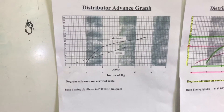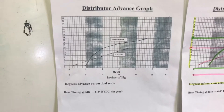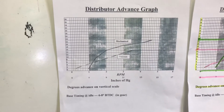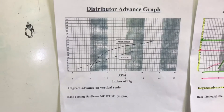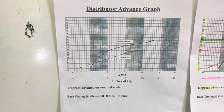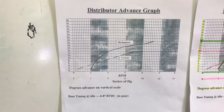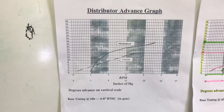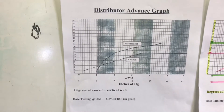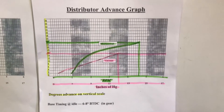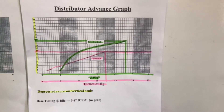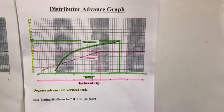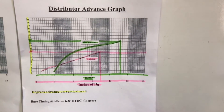So here is the graph that he sent us, and this definitely can be a little bit confusing. I'm not sure which company built the distributor, but they definitely could use some advice in the user-friendly graph department. So what I've done is I have highlighted and kind of sectioned this graph out to make it a little bit more readable.